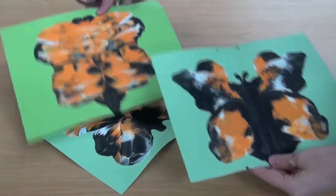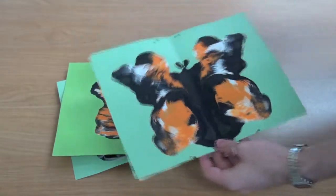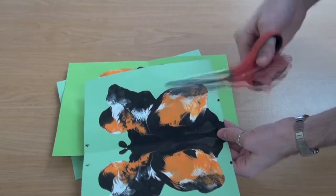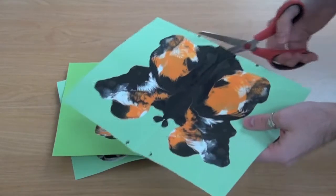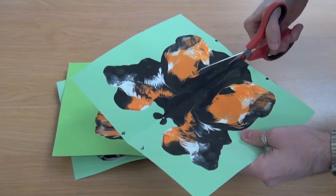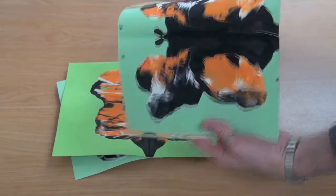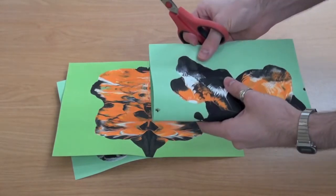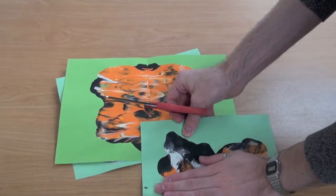Now that all three have dried, we're going to take our scissors and cut them out. You can either cut it out like this, or I suggest folding it in half so that you have a perfect mirror image.